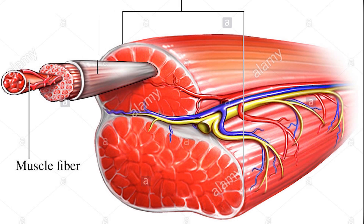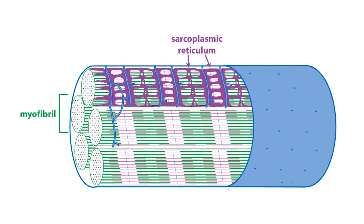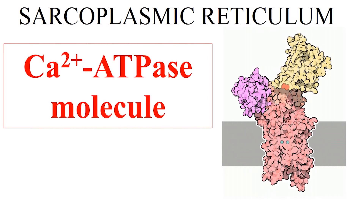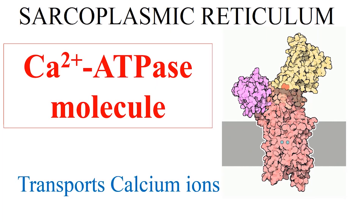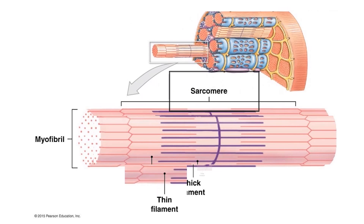Muscles are made up of long and elongated cells called muscle fibers. Each muscle fiber is made up of hundreds of thin cylindrical strands called myofibrils. The membrane that surrounds each myofibril is called the sarcoplasmic reticulum. 80% of the sarcoplasmic reticulum is composed of calcium ATPase molecules, whose function is to transport calcium ions. Each myofibril consists of a repeating linear array of contractile units called sarcomeres. Sarcomeres are made up of thin and thick filaments, which are organized around each other.